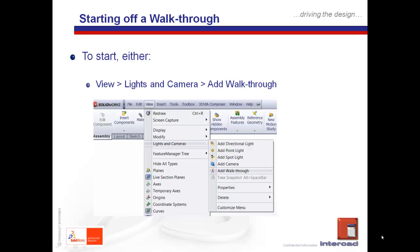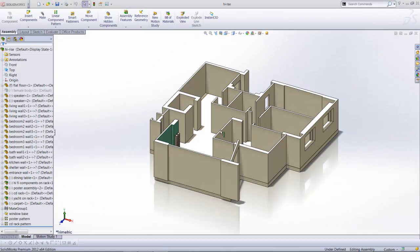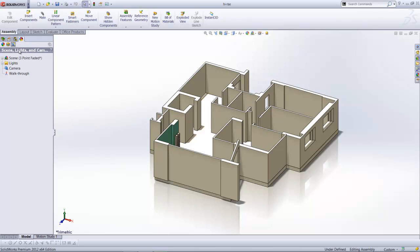Following the usual View pull-down menus, there is also the ability within the Display Manager tab. If you switch over to the Scene, Lights, and Camera option, there is a walkthrough selection, and if you do a right mouse click there, you can also create a walkthrough. The Display Manager can be found here, and under it you would have three options: Views, Decals, and Scene, Lights, and Camera. Within the third option, do a right mouse click and add a walkthrough.